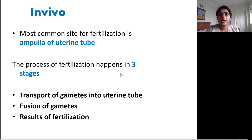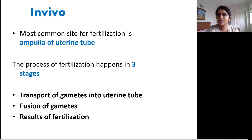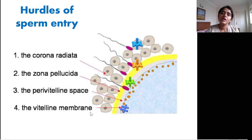The process of fertilization actually happens in three stages. First, there should be transport of gametes into the uterine tube — both the oocyte and the sperm should reach the uterine tube. Then there should be fusion of the gametes, and finally we have the results of fertilization. For a sperm to enter into an oocyte, there are mainly four hurdles.